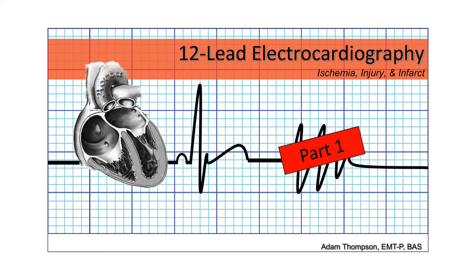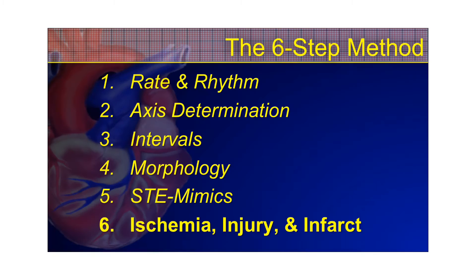Hello, I'm Professor Adam Thompson, and this is going to be part one of the STEMI series — Ischemia, Injury, and Infarct — of the 12-lead electrocardiography course. If we review our six-step method for 12-lead ECG interpretation, you have rate and rhythm, axis determination, identify your intervals, your morphology, your different STE mimics, and finally interpret the 12-lead for any presence of ischemia, injury, or infarct.